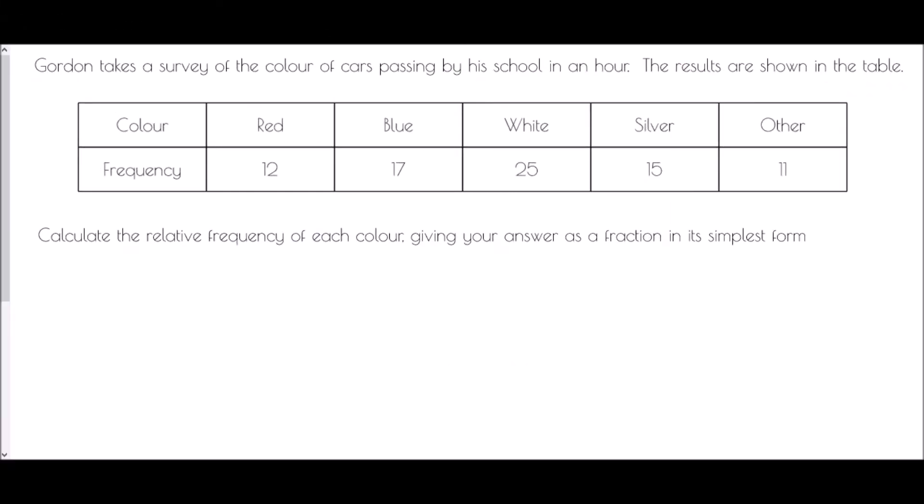We're going to begin with Gordon taking a survey of the color of cars passing by his school in an hour, and the results are shown in the table. So he saw red cars, blue cars, white cars, silver cars and other colored cars with 12 reds, 17 blues, 25 whites, 15 silvers and 11 others. And we've been asked to calculate the relative frequency of each color, giving your answer as a fraction in its simplest form.